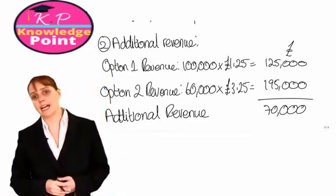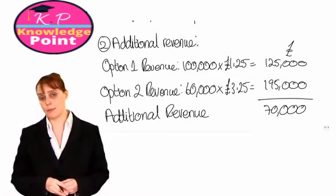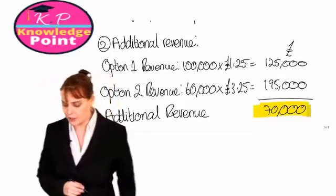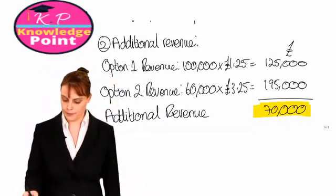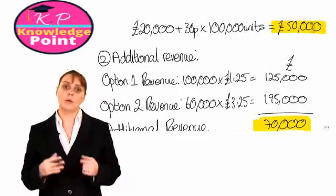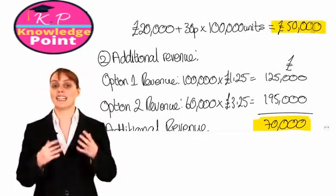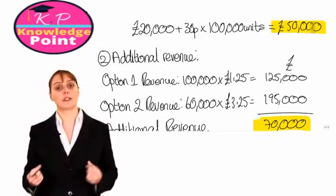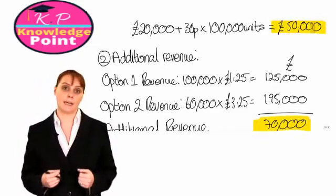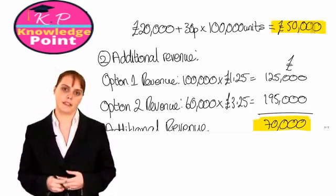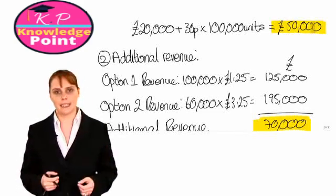We have now completed our calculations. Should the company sell product A or do the further processing and sell A+? The additional revenue earned is £70,000, whereas the additional costs incurred are £50,000. The additional costs are clearly less than the additional revenue, so the company should do the further processing and sell product A+. Overall, the net benefit from doing this further processing is £20,000 — the additional revenue minus the additional costs.